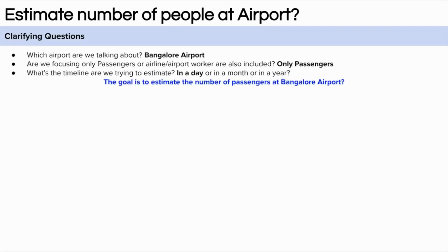First let's start with the clarifying questions. The very first question we can ask is about the airport — which airport are we considering here? Because the number of passengers at an airport in metro cities would be very different from an airport in a tier 2 or tier 1 city. So it is important to clarify about the airport.